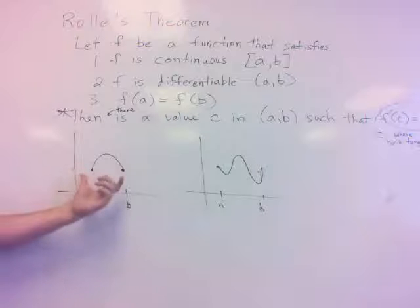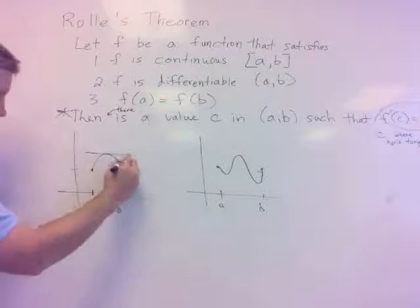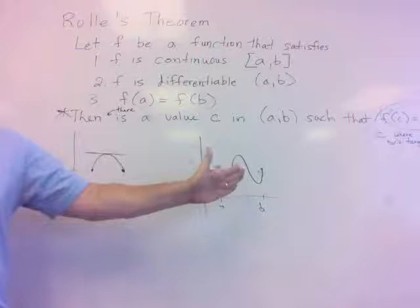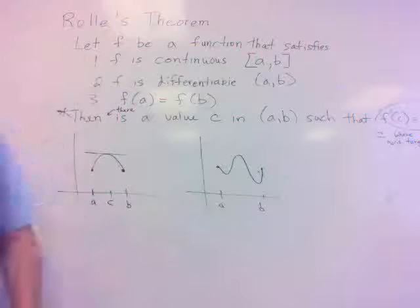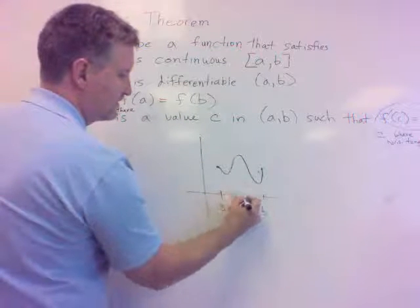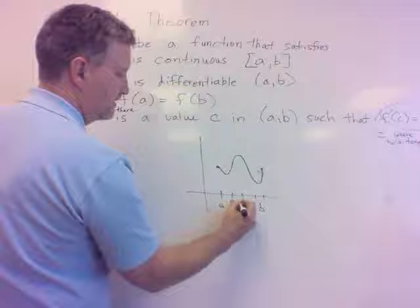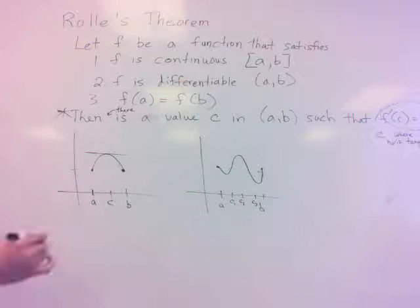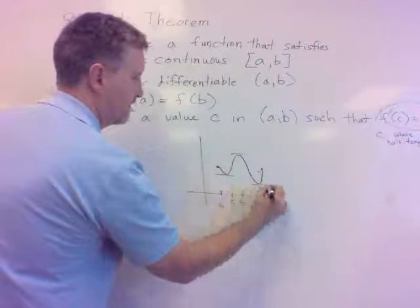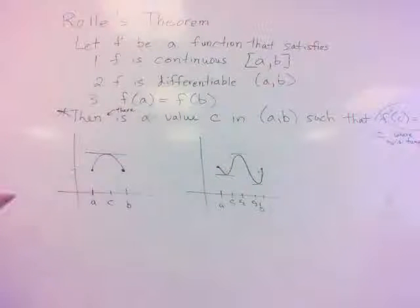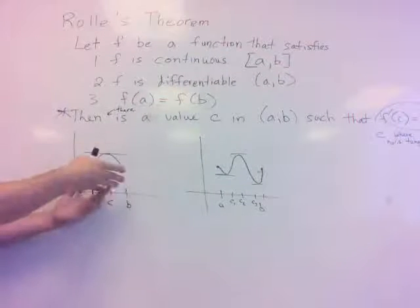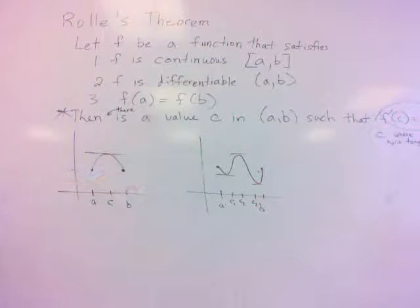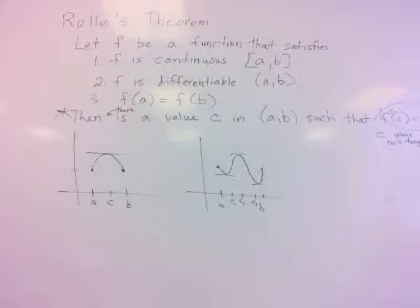Isn't there a C where that's true here? Right there. Now this one, what about that one? There's three C's that would work there, right? This one, this one, and this one. Take your pick. All three of those C's would be valid, right? Because you've got horizontal tangents there, there, and there. But Rolle's theorem says no matter what, no matter what the function is, as long as it's continuous and differentiable, there's going to be one horizontal tangent somewhere in there.